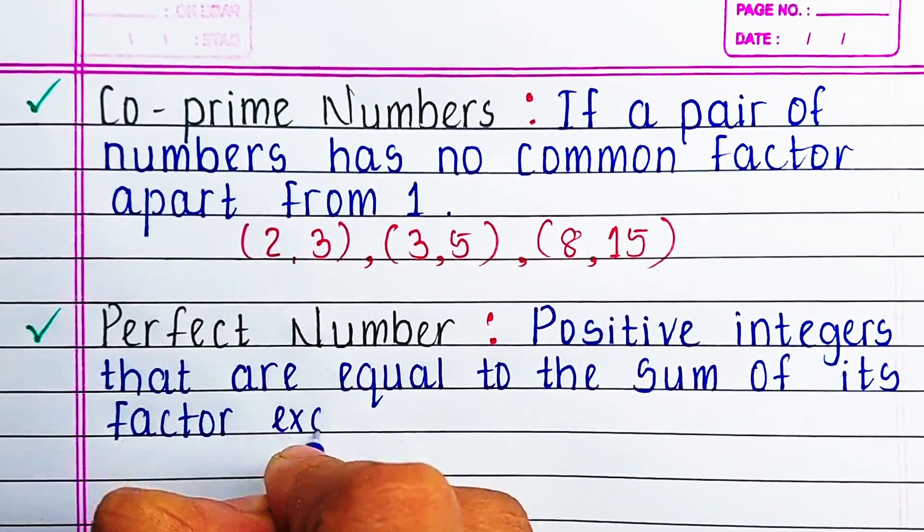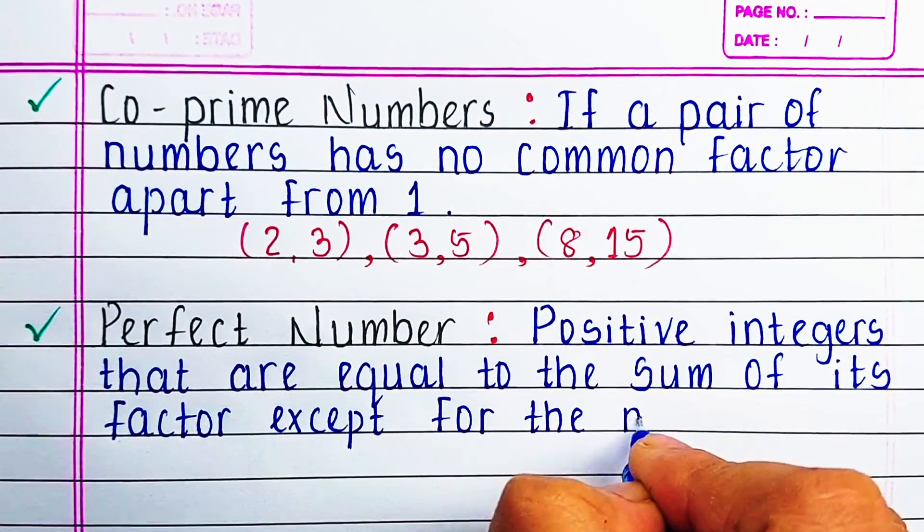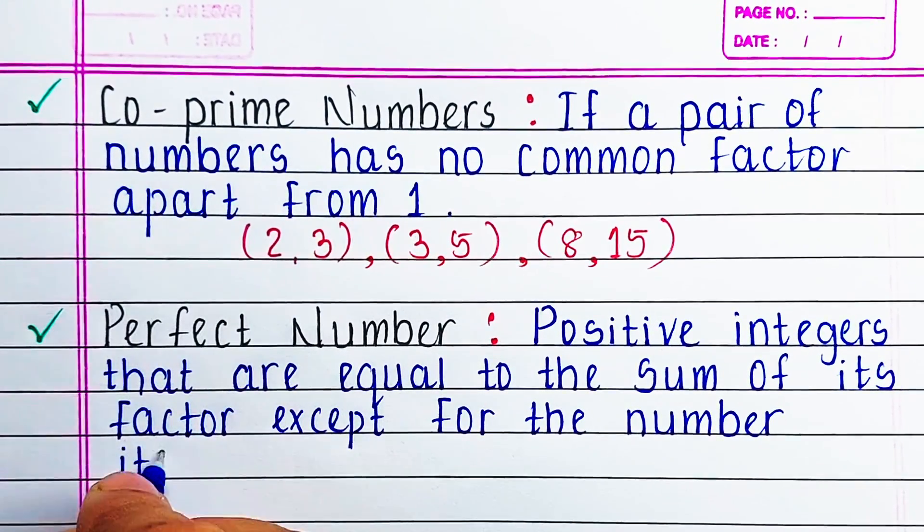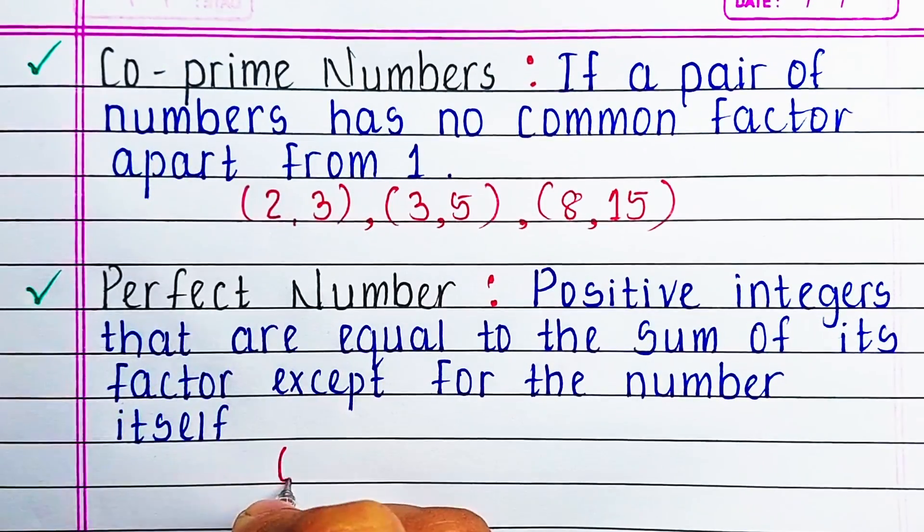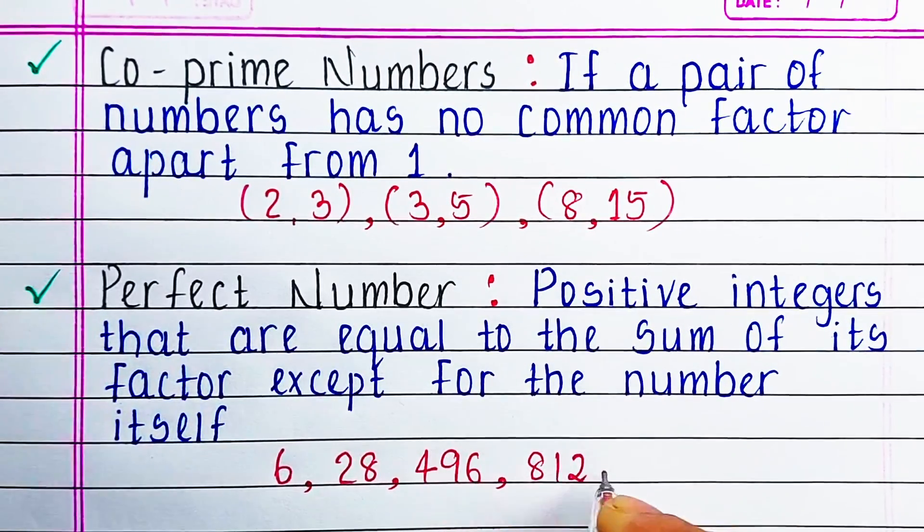Perfect number. Positive integers that are equal to the sum of its factors, except for the number itself, is known as perfect number. For example, 6, 28, 496, 8128, etc.